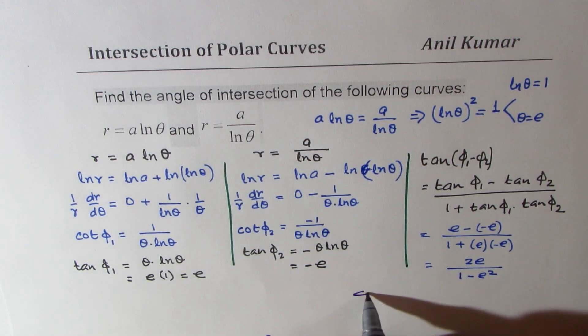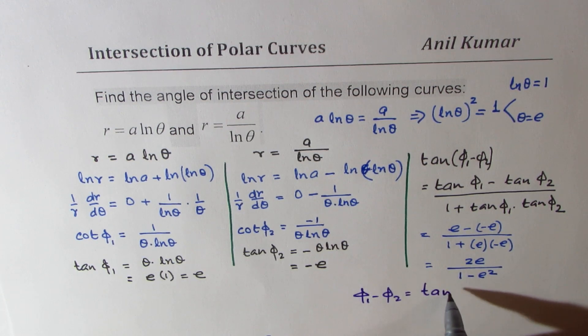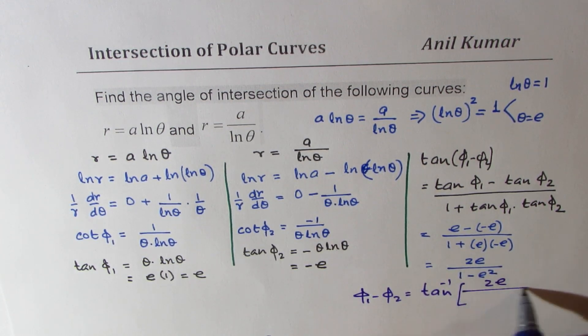So we get phi 1 minus phi 2 equals to tan inverse of this. Do you get it?